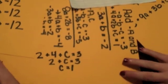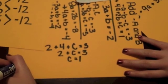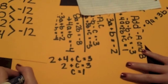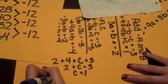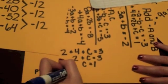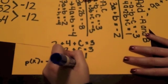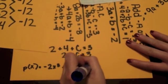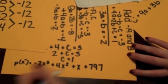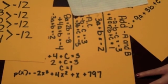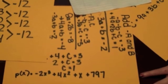So 2 plus C equals 3, which means C equals 1. Now we have all of our coefficients and we can plug them into our polynomial equation, which is going to be P(x) equals negative 2x cubed plus 4x squared plus x plus 797. And that is going to be our final answer. That is how you find a polynomial equation given only a table of values.